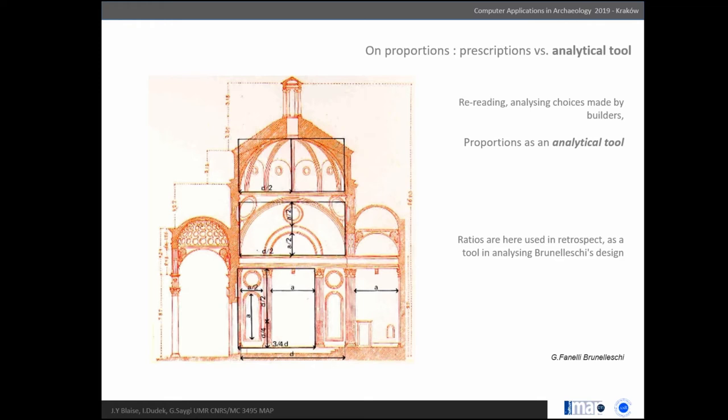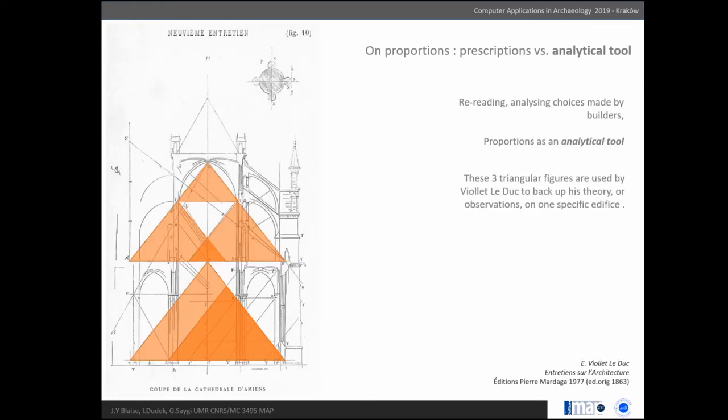You can also use proportions in retrospect. This analysis of Brunelleschi's architecture is done by a specialist in retrospect. One classic example is Julius Viollet-le-Duc's analysis of the Gothic period. He uses a triangular figure to analyze the way a Gothic cathedral is built. He draws triangles like this and shows the relations, the proportions, between the various parts of the edifice.